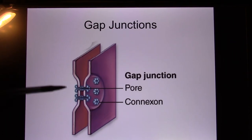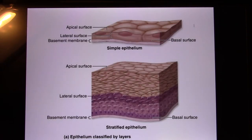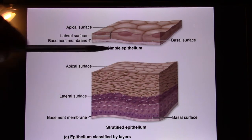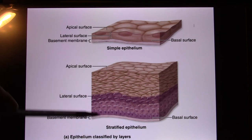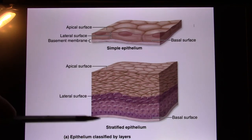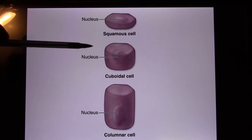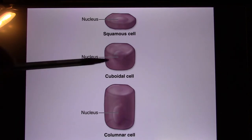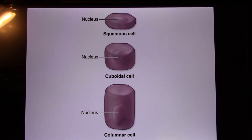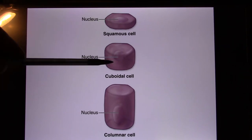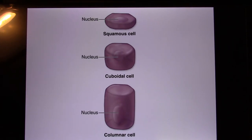Gap junctions provide ion communication. Epithelial cells can have one layer, called simple, or more than one layer, called stratified. They also come in different shapes: flat is called squamous, square is cuboidal, and tall is columnar. This gives six combinations: simple squamous, simple cuboidal, simple columnar, stratified squamous, stratified cuboidal, and stratified columnar.